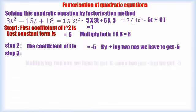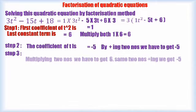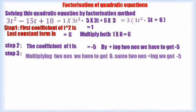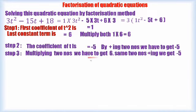That is step 3. Multiplying two numbers, we have to get +6 and the same two numbers adding together, we have to get -5. Such a number, we have to look for it.